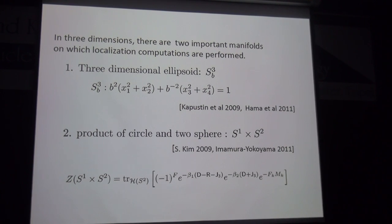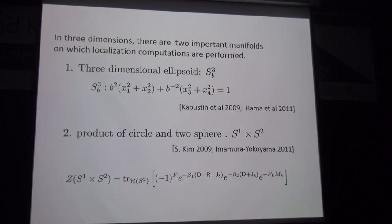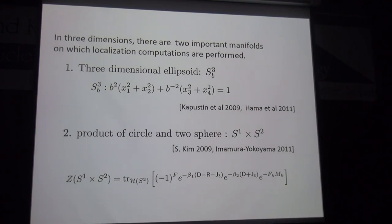In three dimensions, there are two important manifolds on which localization computations are performed. One is the three-dimensional squashed sphere, defined by an equation with squashing parameter b, such that |z₁|² + |z₂|² = 1. The second manifold is S¹ × S². The partition function on this geometry is known as the superconformal index.